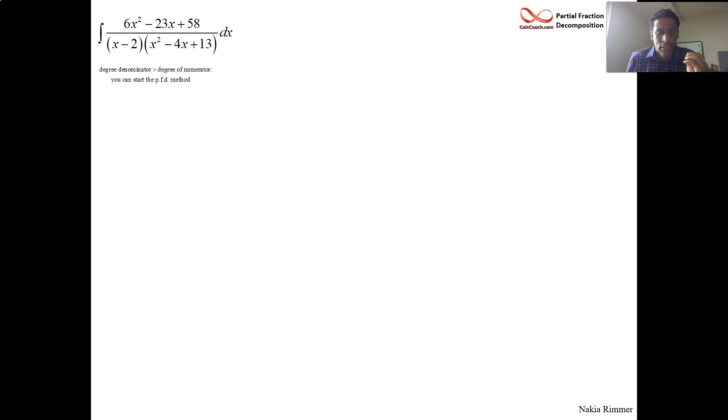The second thing you do after recognizing that and knowing that you can start is that you need to identify what types of terms you have. Correct identification of the type of term will lead to correct decomposition. So, x minus 2, that's a linear term. x squared minus 4x plus 13, that is an irreducible quadratic. b squared minus 4ac is negative there. There's no way to factor that. That parabola doesn't intersect the x-axis. There's no real roots to this.